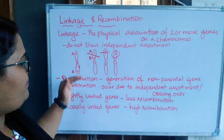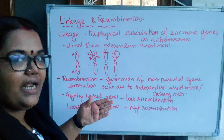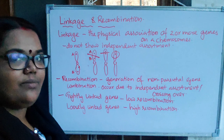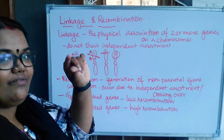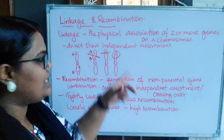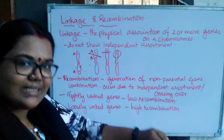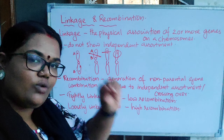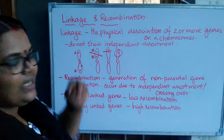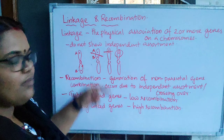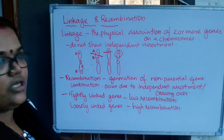According to Mendel, genes show independent assortment — they separate at the time of gamete formation. But if these are linked genes, meaning they are closely related, they will not show independent assortment. They will go together into the gametes. If the distance between genes is more, then there is a greater chance of recombination — new combinations.